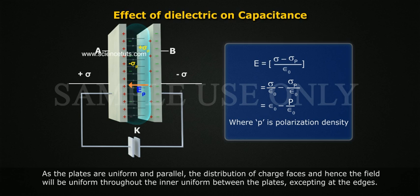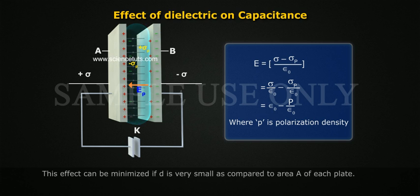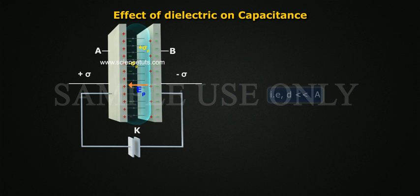As the plates are uniform and parallel, the distribution of charge faces and hence the field will be uniform throughout the inner uniform between the plates, excepting at the edges. This effect can be minimized if D is very small as compared to area A of each plate, that is, D much less than A.